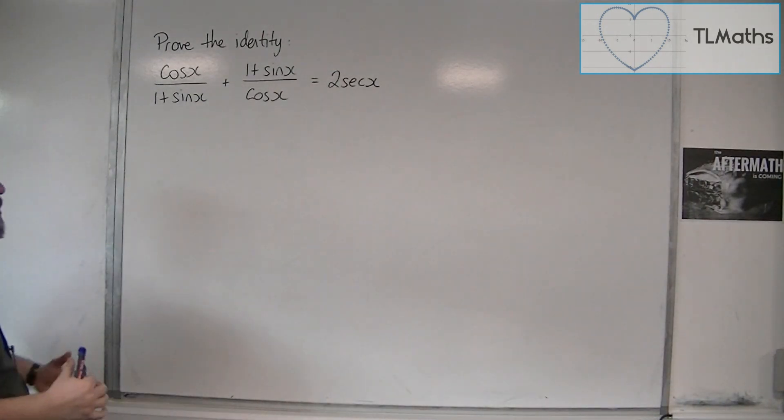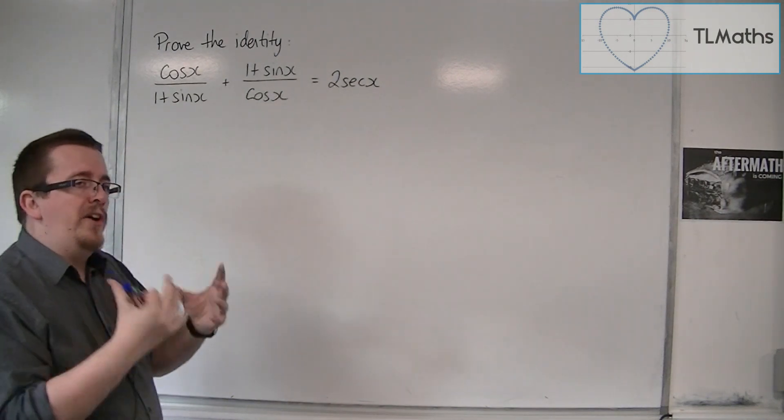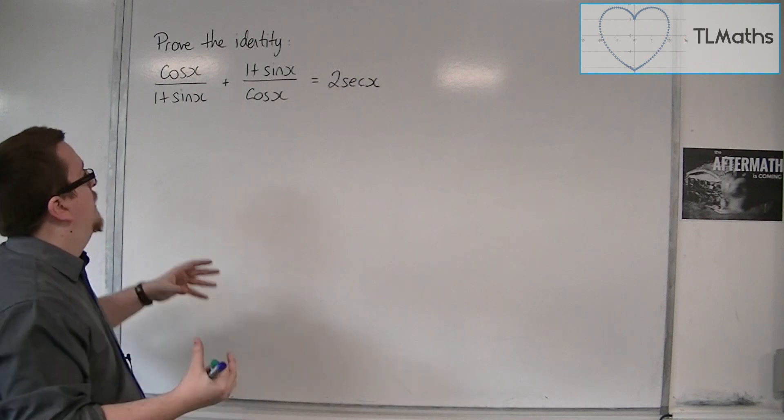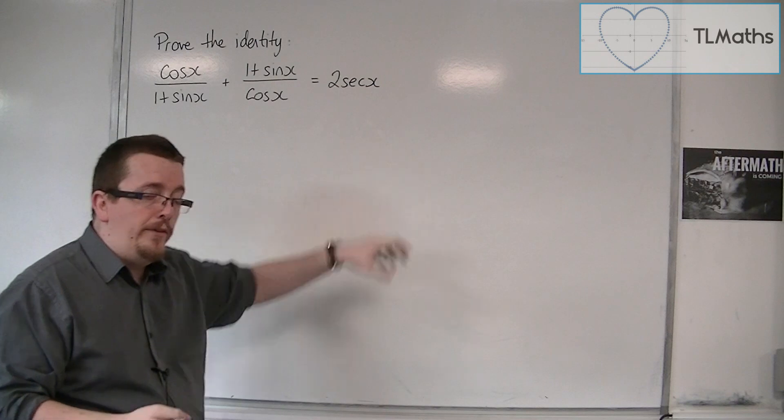I would always suggest, with a trig identity, to start with the most complicated side. So this is the most complicated side, and we're going to work from the left-hand side to the right-hand side in this case.